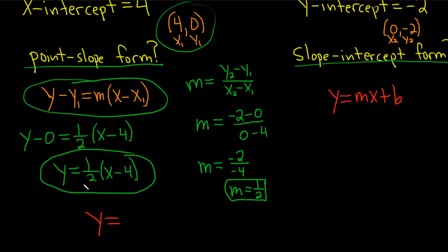So all we do now is just distribute. 1 half times x is 1 half x. And then 1 half times negative 4, that's just going to be negative 2, because 1 half times 4 is 2 and you keep the negative. And that's it. That's the slope-intercept form. This part is usually really easy. The hard part is doing this part.